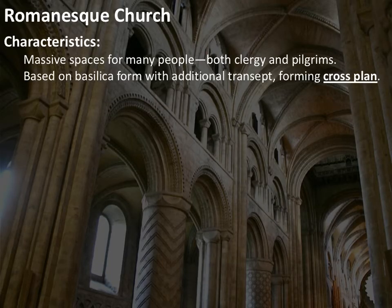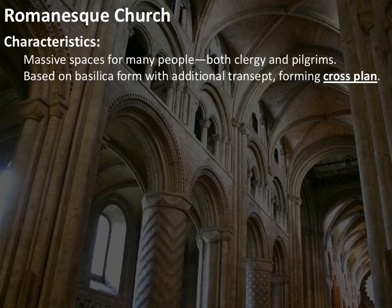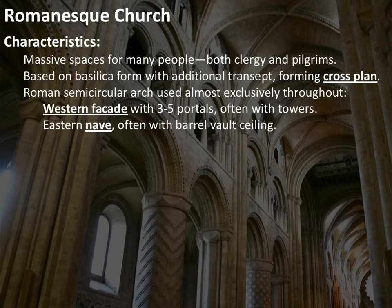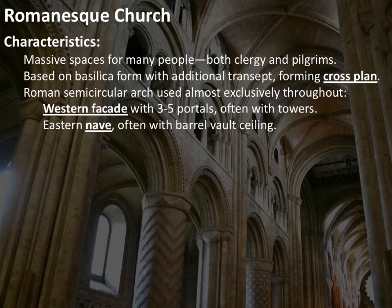The most important structures in the Romanesque period are the churches. Just like the Roman basilicas, these are massive buildings because clergy, pilgrims, and local people all come regularly. They are based on that rectangular basilica form, but with an additional piece called the transept that makes it into the form of a cross. We continue to see that semicircular arch from the Roman period, and there is usually quite a big western facade — you enter on the west and move toward the east — often with multiple portals and sometimes towers.